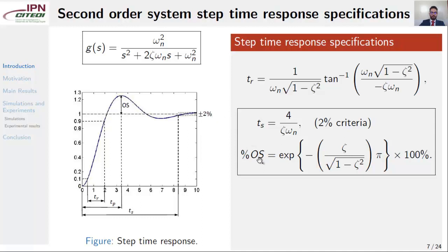And finally, the percent overshoot, which is the amount that the waveform overshoots the steady state or final value at the peak time, expressed as a percentage of the steady state value.